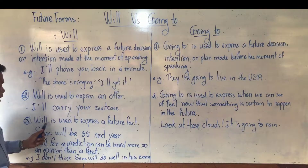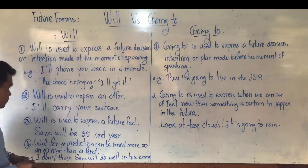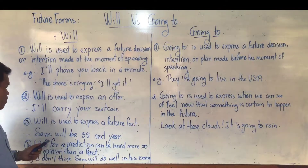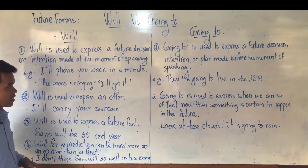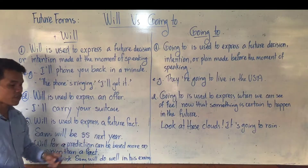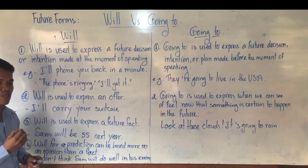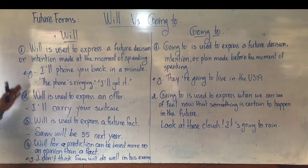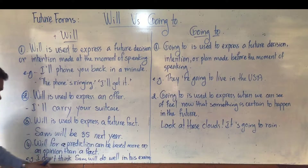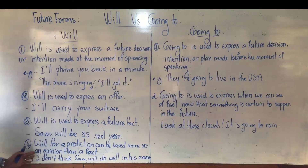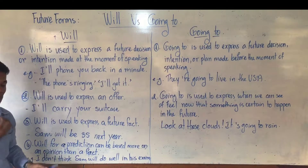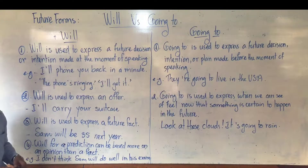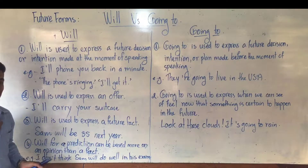Number three: will is used to express a future fact. A future fact means that the speaker thinks something should happen in the future. For example: 'Sam will be certified next year.' This is called the future simple. Number four: will for prediction can be based more on an opinion than a fact. When you use will this way, it is based more on opinion. For example: 'I don't think Sam will do well in his exam.' It is just my thinking.